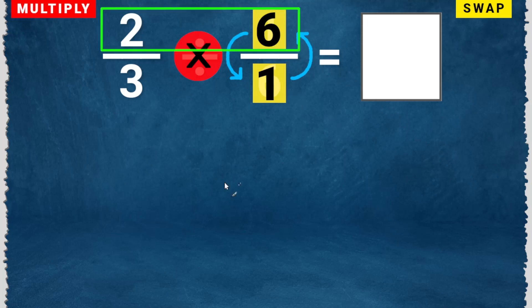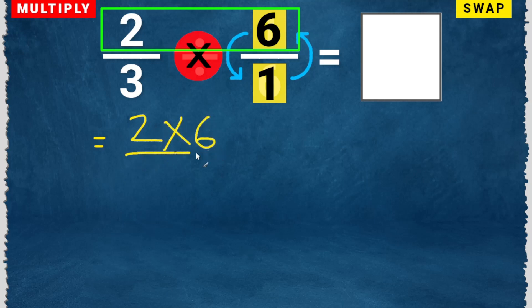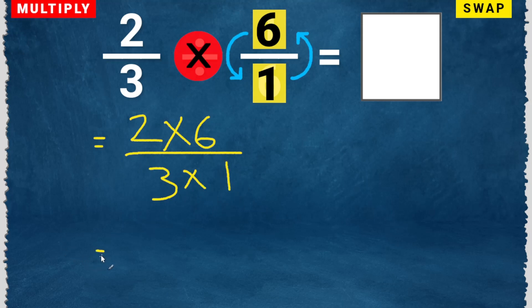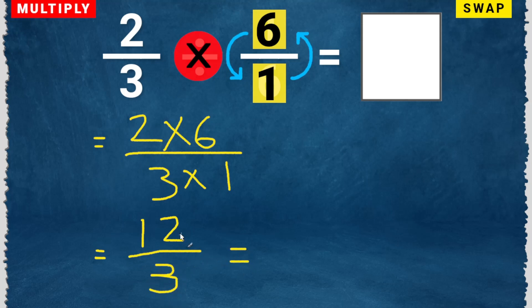Then multiply the numerators: 2 times 6, and the denominators: 3 times 1 is 3. This gives 12 over 3. This can be simplified: 12 divided by 3 is 4. So the answer is 4.